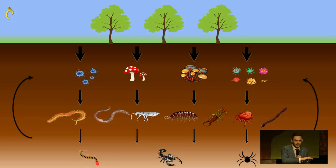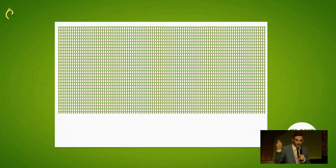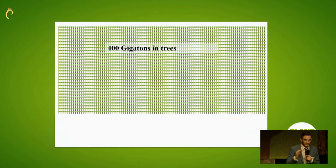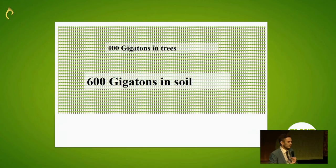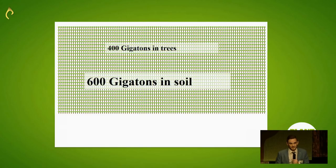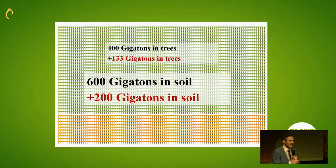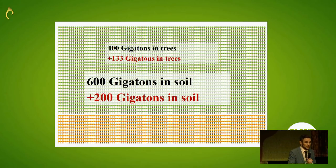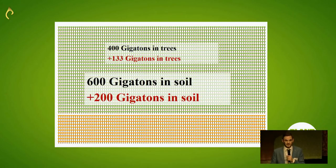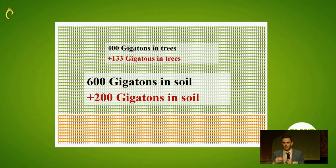This soil can store carbon for hundreds to even thousands of years. When we think about the global forest system, we estimate it's currently storing on the order of about 400 gigatons of carbon — and in the soil below those trees, even more. If we added an additional trillion trees, that's going to be over 100 gigatons of carbon potentially stored within the trees, and over 200 gigatons potentially stored within the soil. But this takes a very long time — it's a long process.